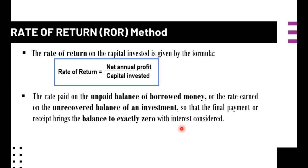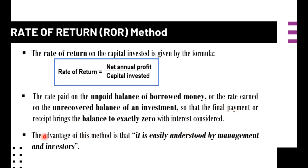The second definition is the rate paid on the unpaid balance of borrowed money, or the rate earned on the recovered balance of an investment, so that the final payment or receipt brings the balance to exactly zero with interest considered. The advantage of this method is that it is easily understood by management and even investors. From the perspective of someone who has borrowed money, the interest rate is applied to the unpaid balance.